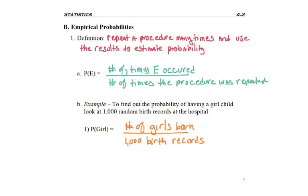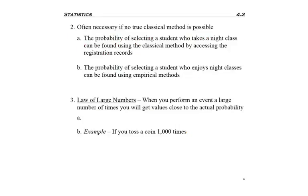We often use the classical method when we have a set number of outcomes, but that's not always possible. For example, the probability of selecting a student who takes a night class can be found with the classical method by accessing registration records.